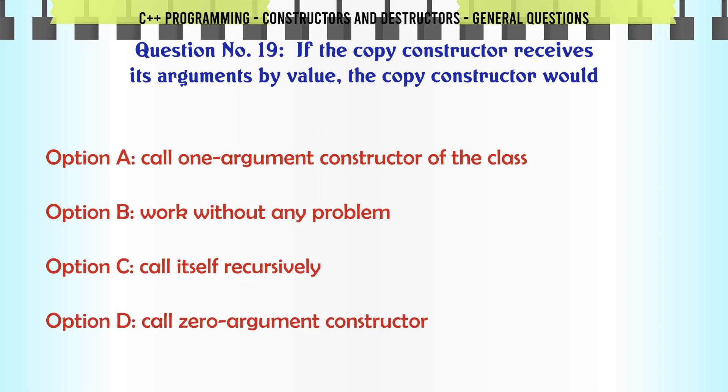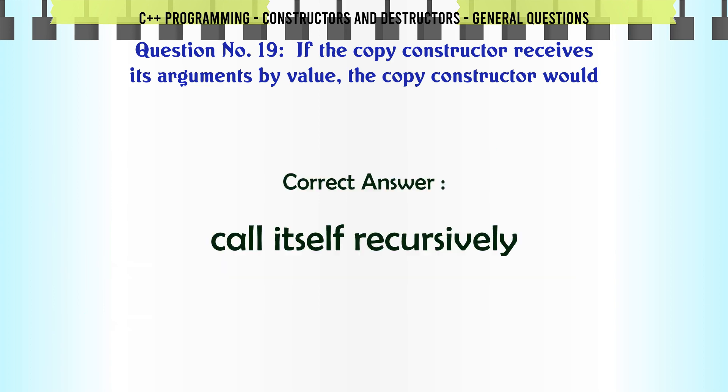If the copy constructor receives its arguments by value, the copy constructor would: A. Call one argument constructor of the class. B. Work without any problem. C. Call itself recursively. D. Call zero argument constructor. The correct answer is Call itself recursively.